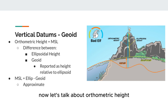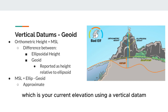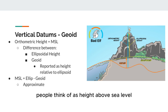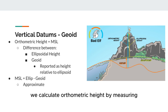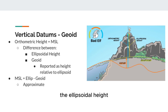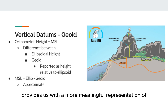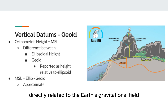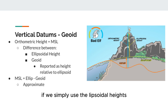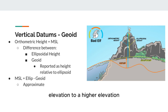Now let's talk about orthometric height, which is your current elevation using a vertical datum. It's the elevation that most people think of as height above sea level. We calculate orthometric height by measuring the ellipsoidal height and then subtracting the geoid height — the separation between the ellipsoid and the vertical datum. This is important because it provides a more meaningful representation of elevation directly related to the Earth's gravitational field. If we simply used ellipsoidal heights, we could have a situation where water flows from a lower elevation to a higher elevation.